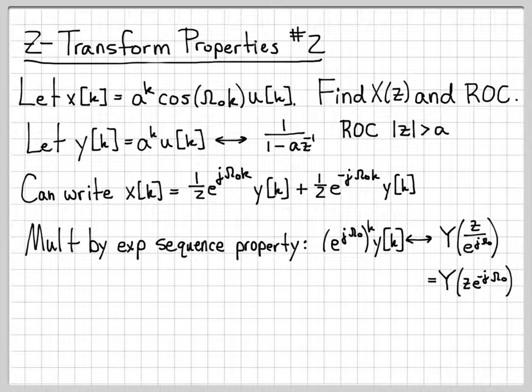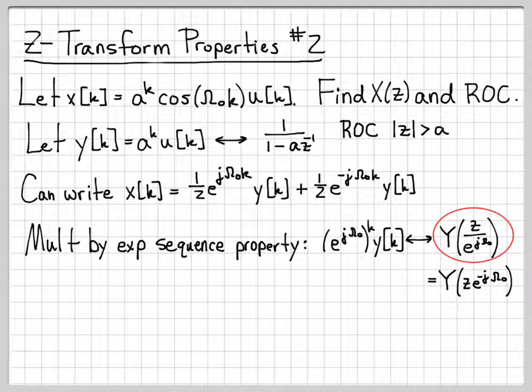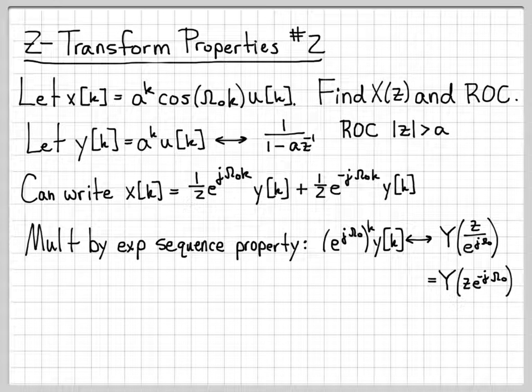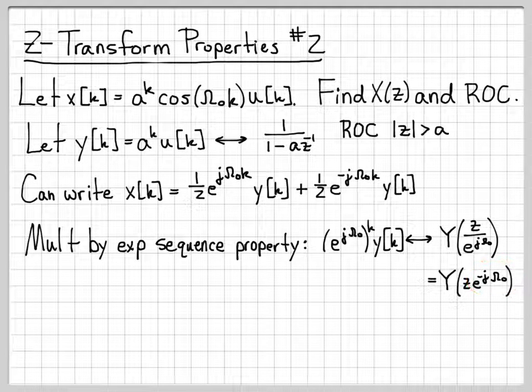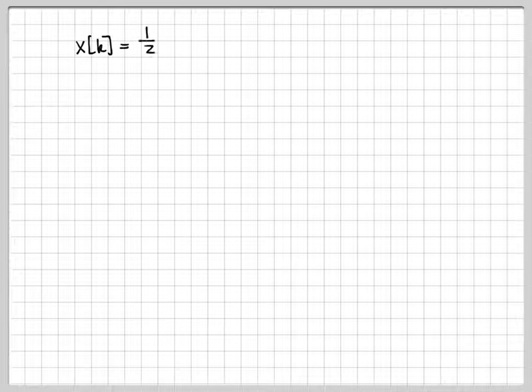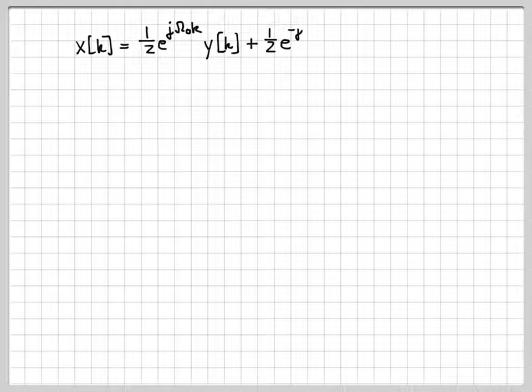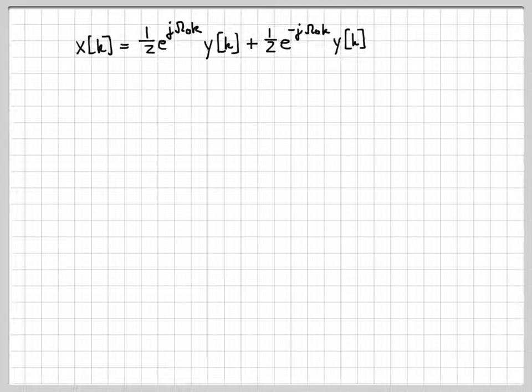Let's work through that. Another way I can write this, instead of having z divided by e^(jω₀), that's obviously equivalent to z times e^(-jω₀). Just move the exponential to the numerator and change the sign on the exponent.